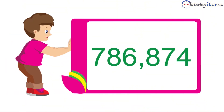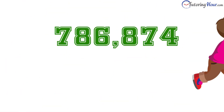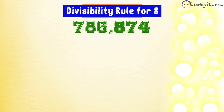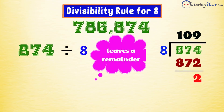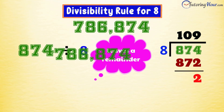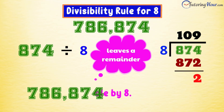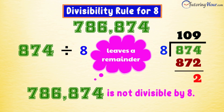Let's check if our next number is divisible by 8. 874, when divided by 8, leaves a remainder too, making it pretty clear that it is not divisible by 8. That's a pretty cool rule.